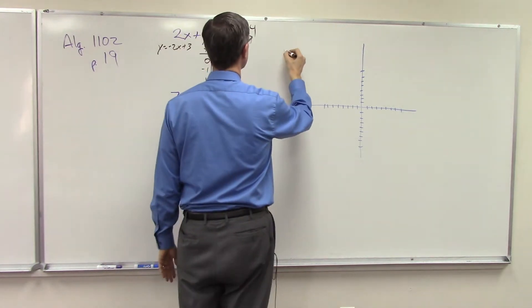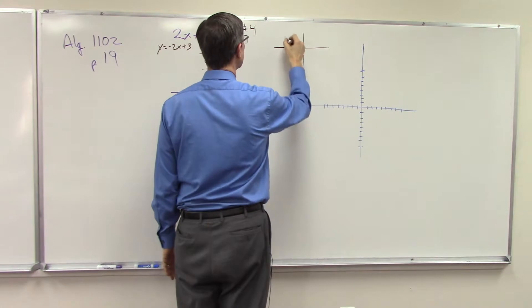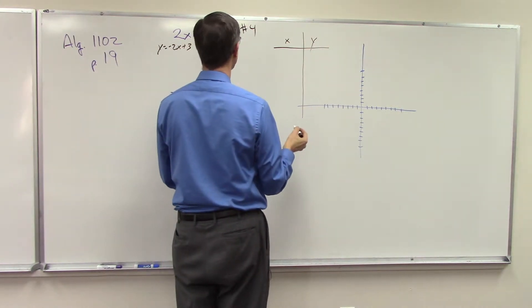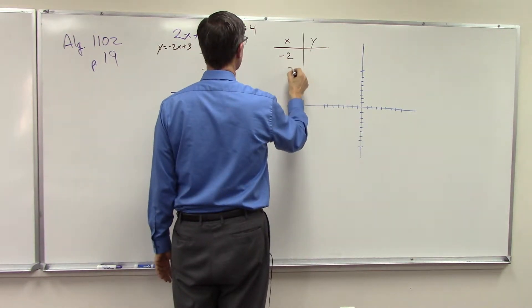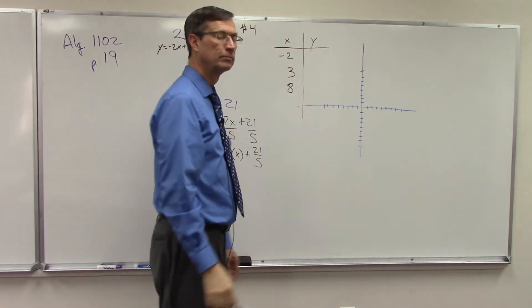Let me do it up here just to make sure it's easier to see what we're doing. So we'll plug in for x, solve for y. And the first number that I want us to plug in is negative 2, and then we're going to plug in 3, and then we're going to plug in 8.